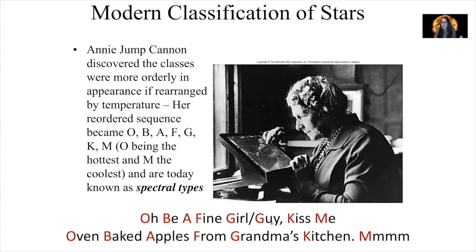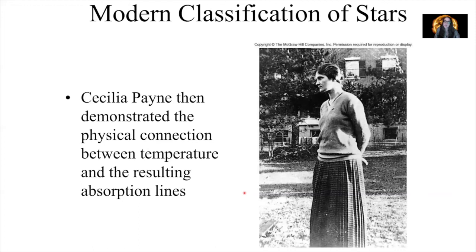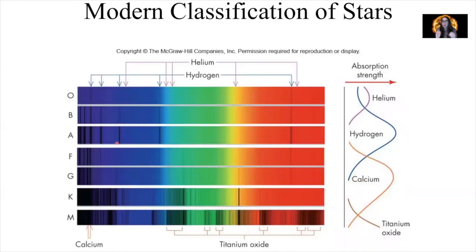You could come up with your own mnemonic to help you remember the ordering of the spectral types from hottest to coolest stars. After Annie Jump Cannon came Cecilia Payne, and she demonstrated the physical connection between the temperature of stars and the resulting absorption lines — helping us understand why the temperature of stars is related to the particular absorption lines we see of hydrogen and other elements. Here is our modern classification for stellar spectral type.